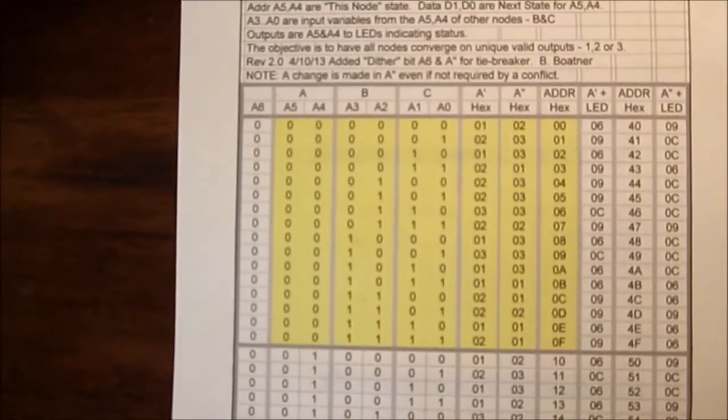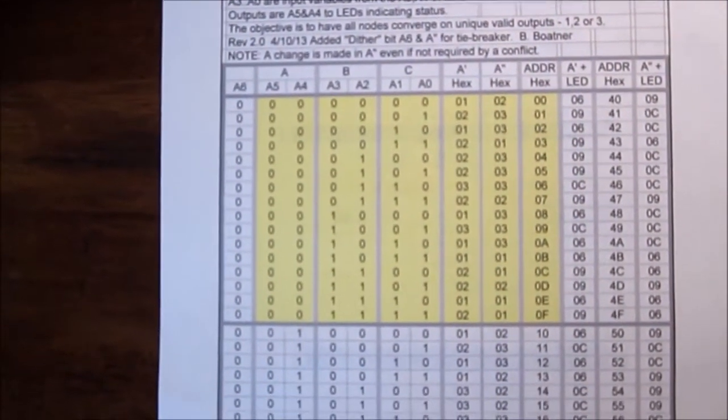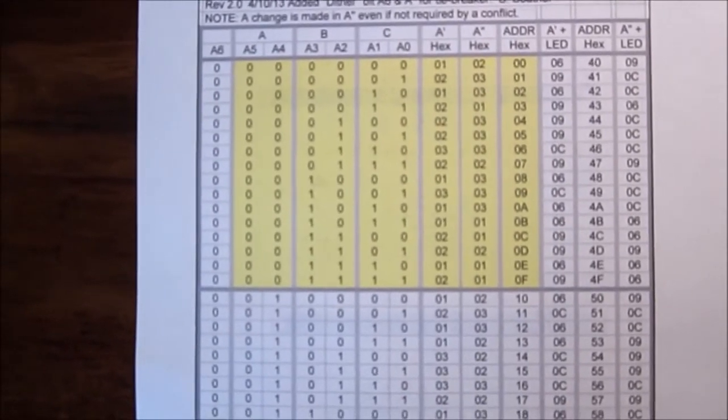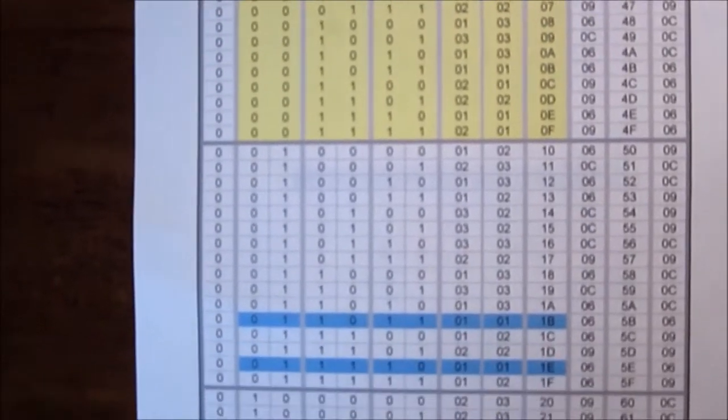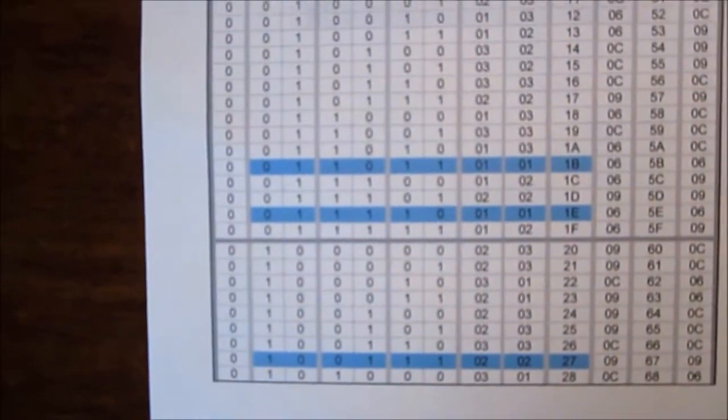And once it sees that it has a unique ID it will hold on to it. It will not change its ID after that. So that's the way the network converges on its unique ID configuration without the use of any kind of microprocessors or anything else.